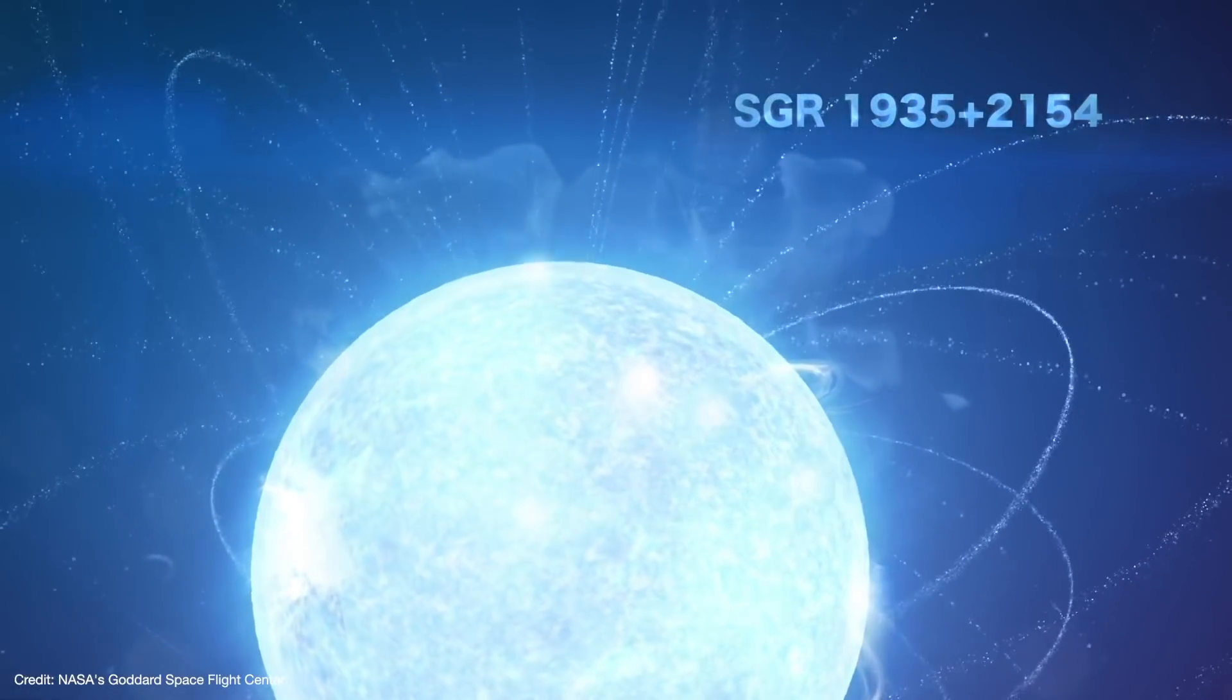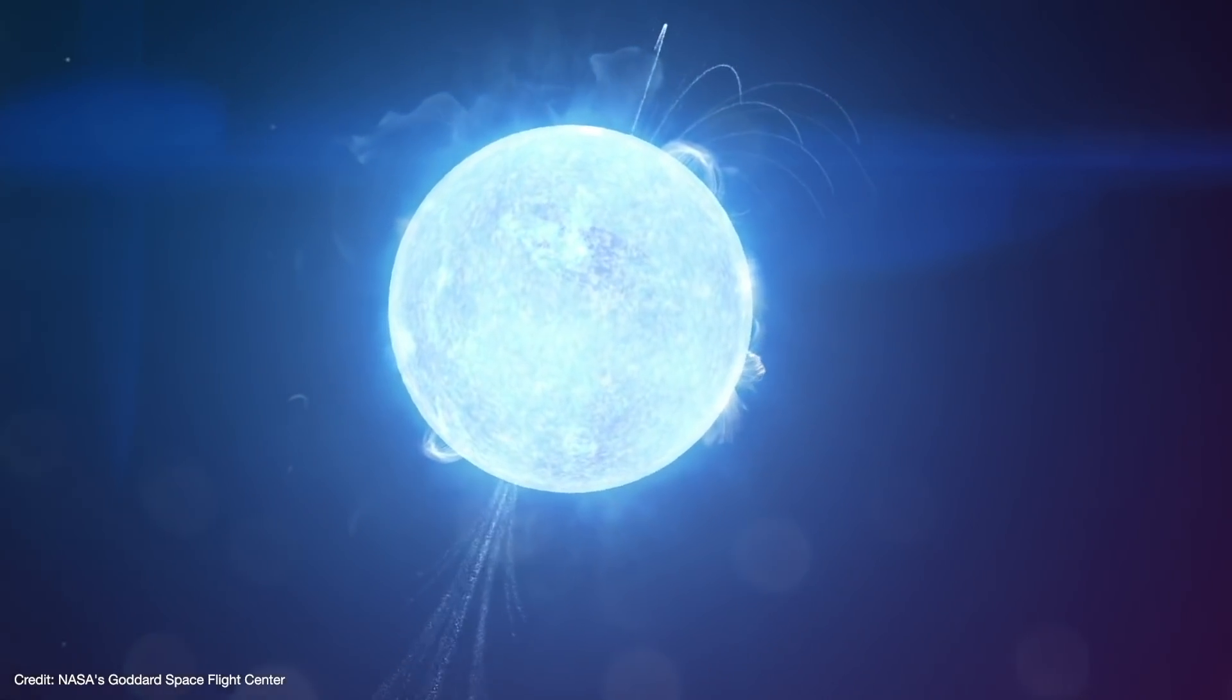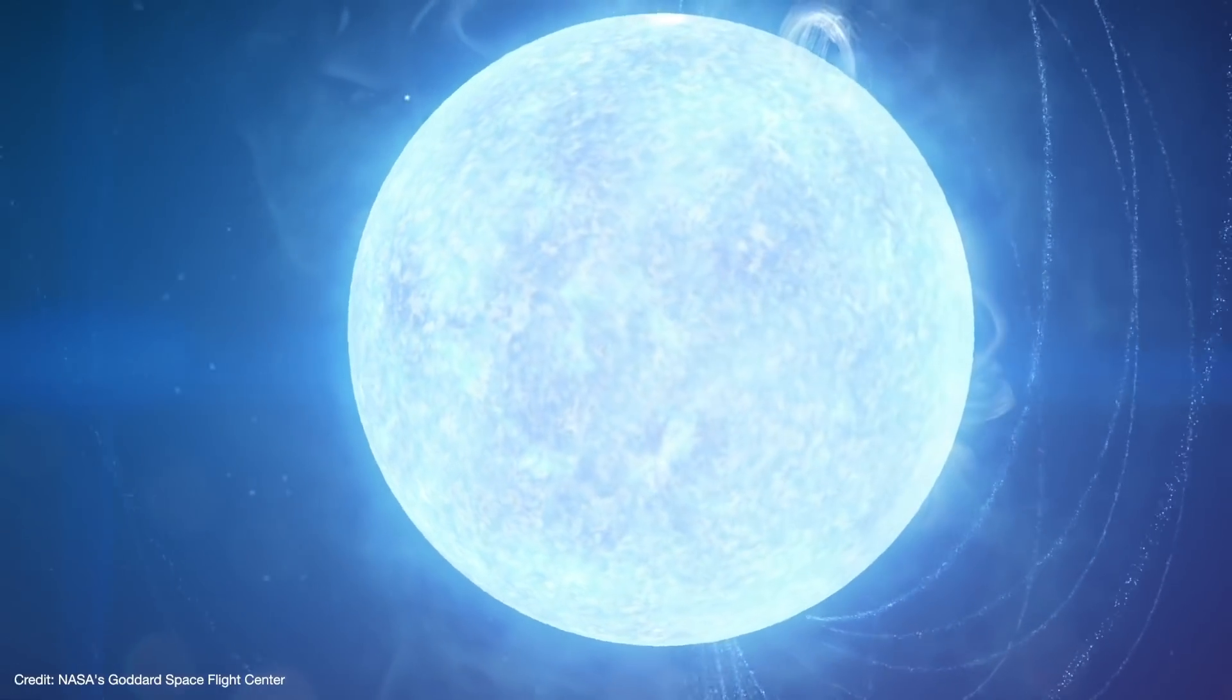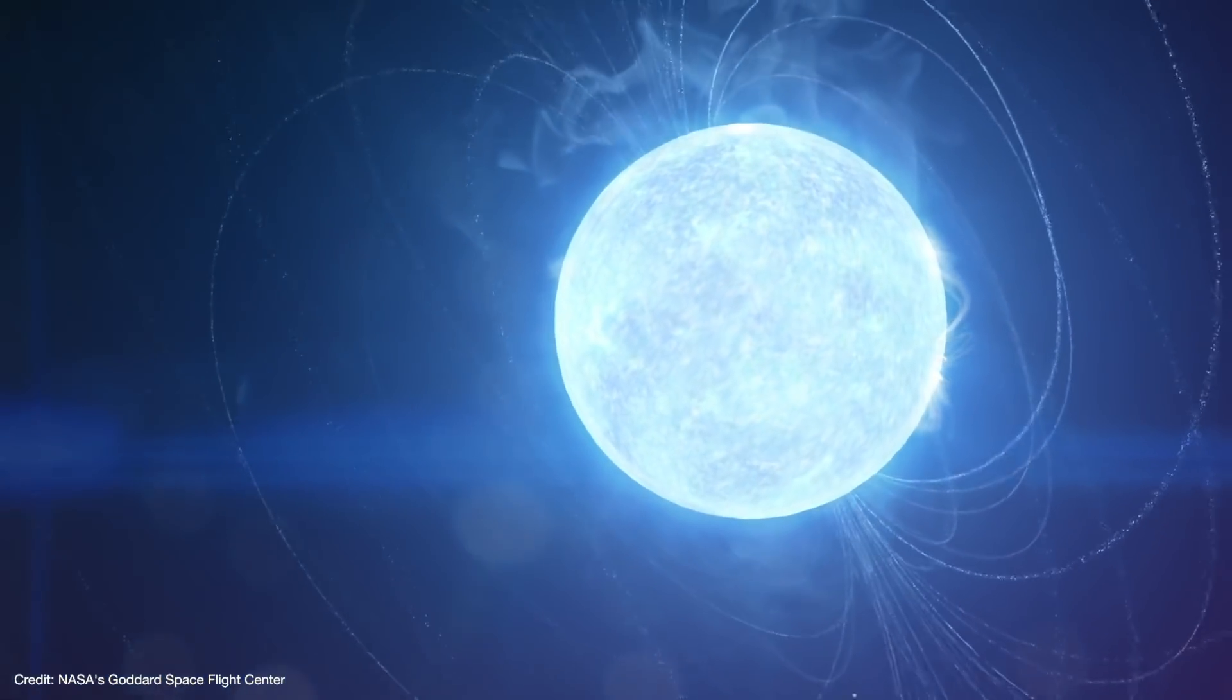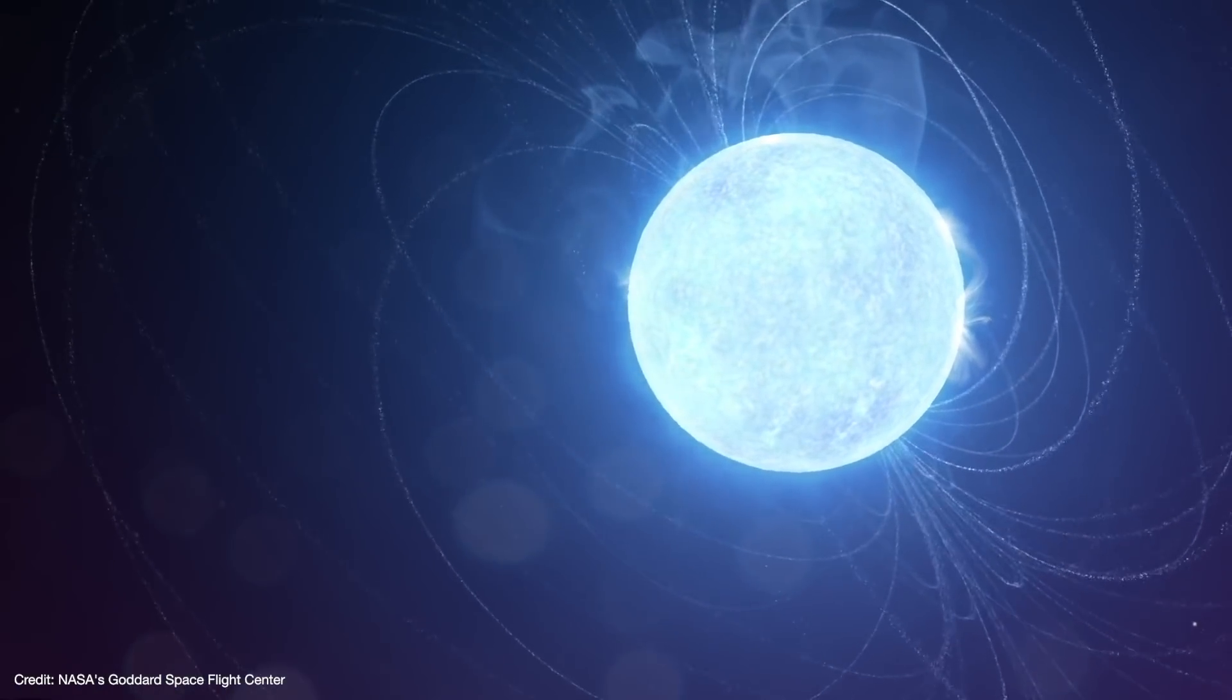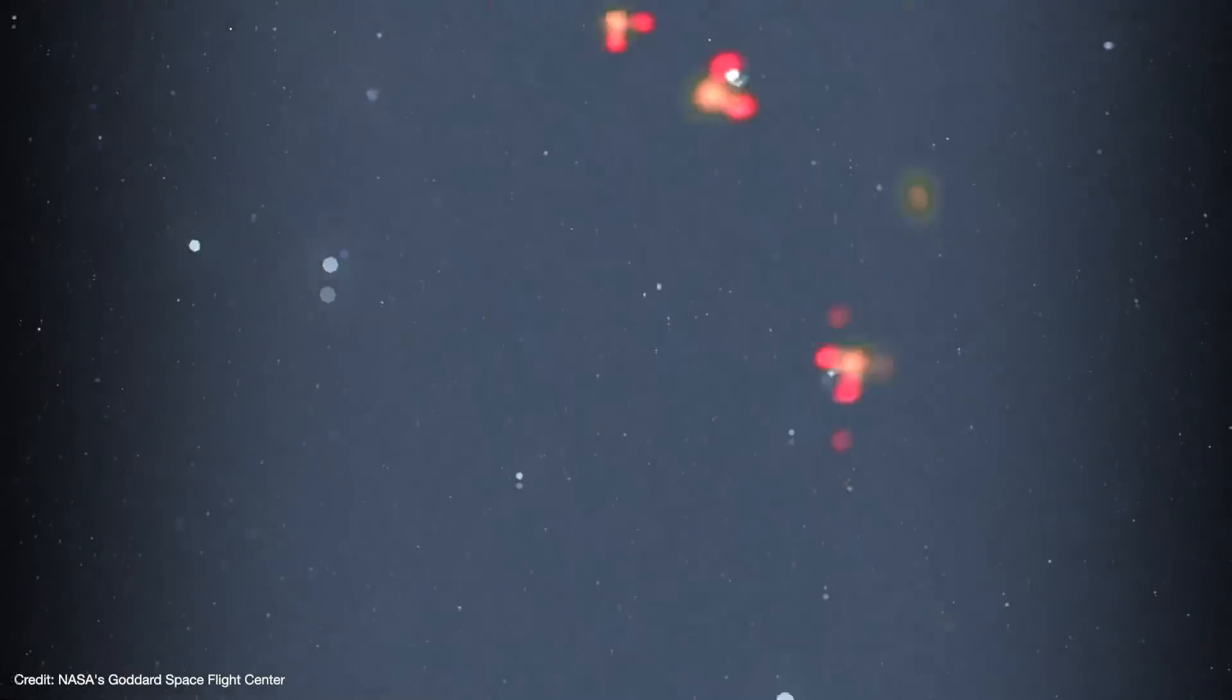But that finally changed in April 2020 when CHIME detected a bright radio burst coming from the magnetar SGR1935 plus 2154. Magnetars are ultra-magnetized neutron stars. Their magnetic fields are around a thousand times stronger than a typical neutron star and 10 trillion times stronger than a refrigerator magnet. That's strong enough to rip molecules apart from thousands of kilometers away and even distort individual protons that wander too close. That means a flabbergasting amount of energy is stored up in the magnetar's magnetic field.